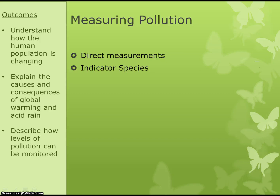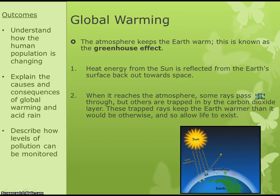We need to monitor the amount of pollution, and there are two ways of doing it: we can either measure directly or we can use indicator species. We also need to know about the causes and consequences of global warming and acid rain.